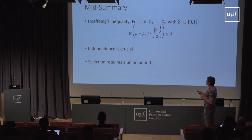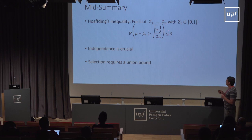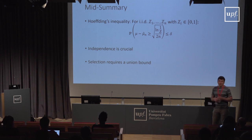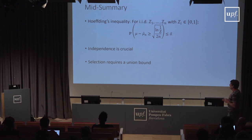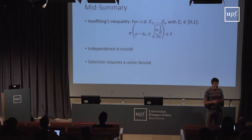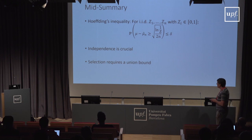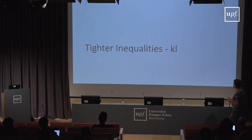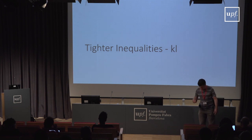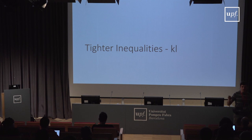A mid-summary: We have shown Hoeffding's inequality — for IID random variables in [0, 1], the probability that the empirical mean underestimates the true mean by more than sqrt(log(1/δ)/(2n)) is bounded by delta. Independence is crucial: without it, things don't work. If we do selection from multiple experiments, we must take a union bound over those experiments, which introduces a log(k) factor. Now, can we get something tighter than Hoeffding's inequality?